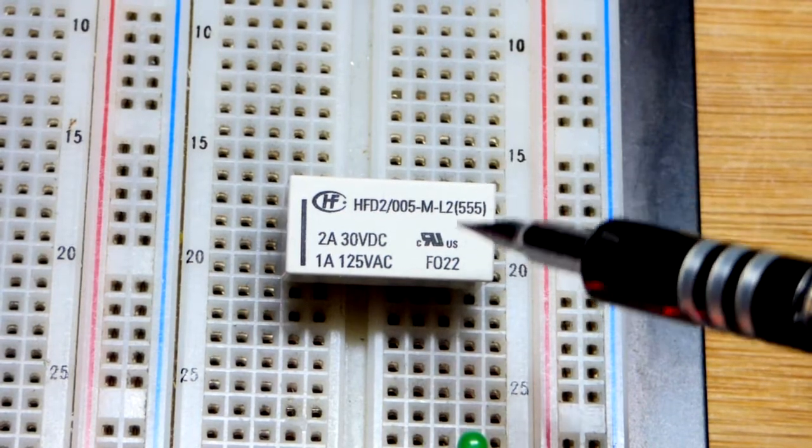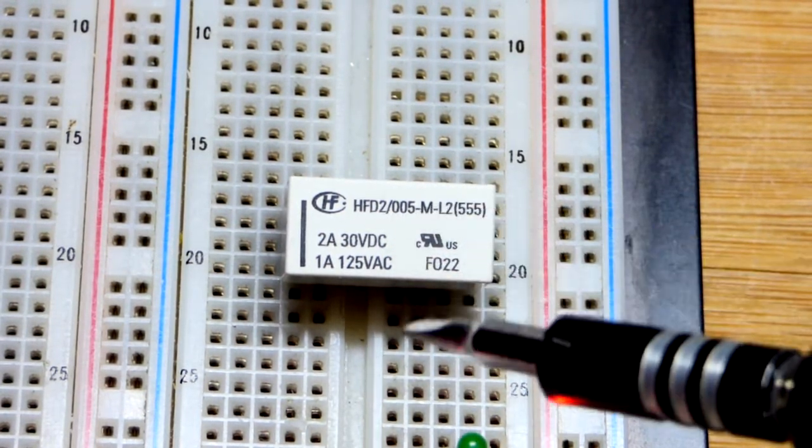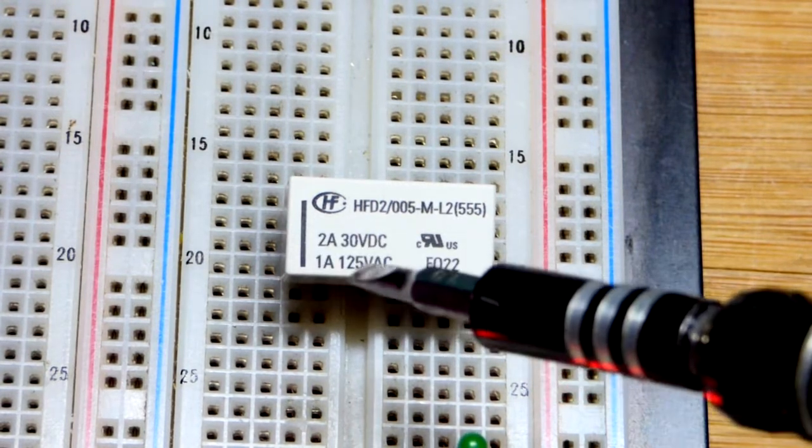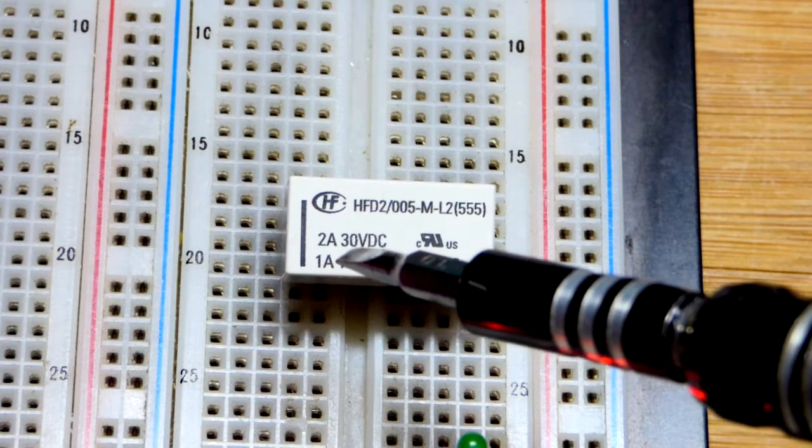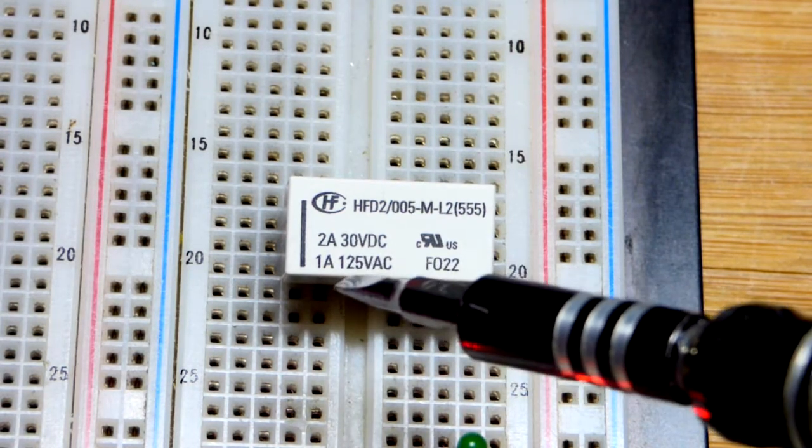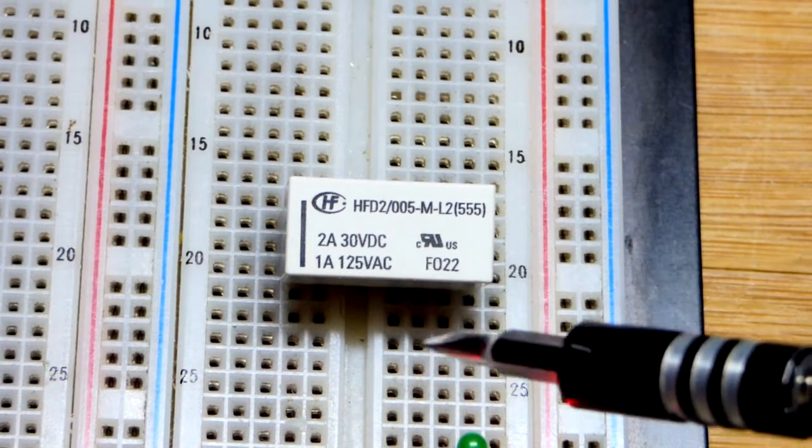And here's a closer look at the writing right there. That appears to be the part number. That's probably the voltage for the coil there. You can see the actual switch over here. You can use a higher voltage, 30 volts DC or 125 volts AC, and there's the current. At least that's what they claim.